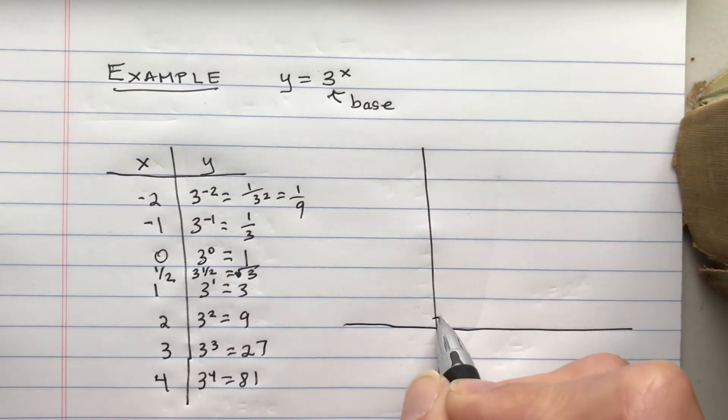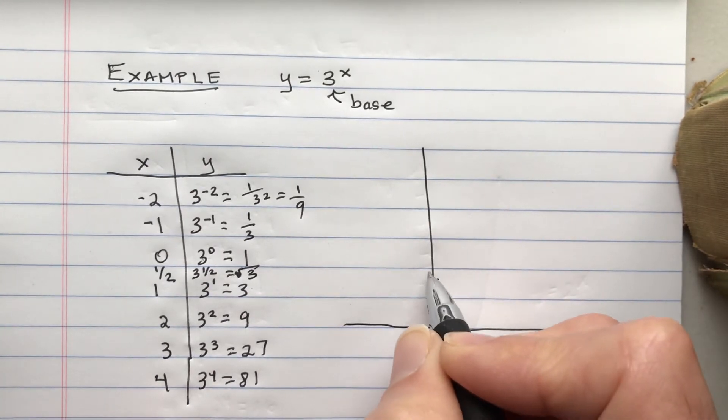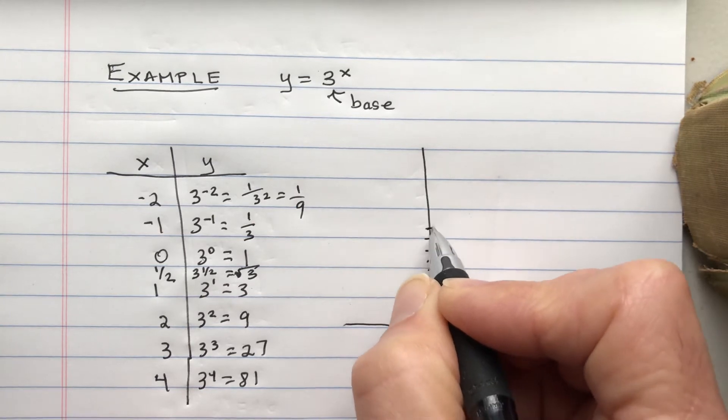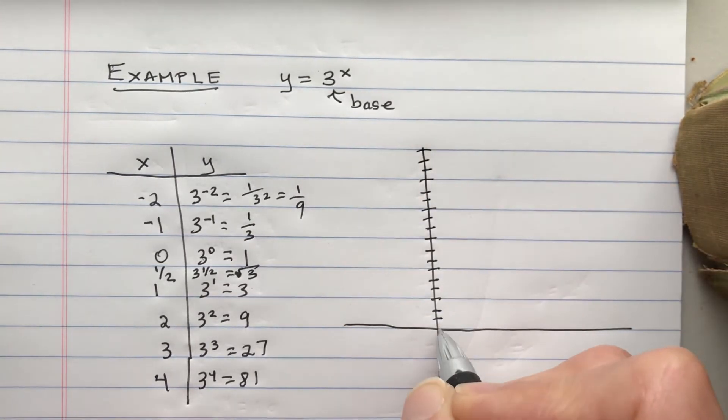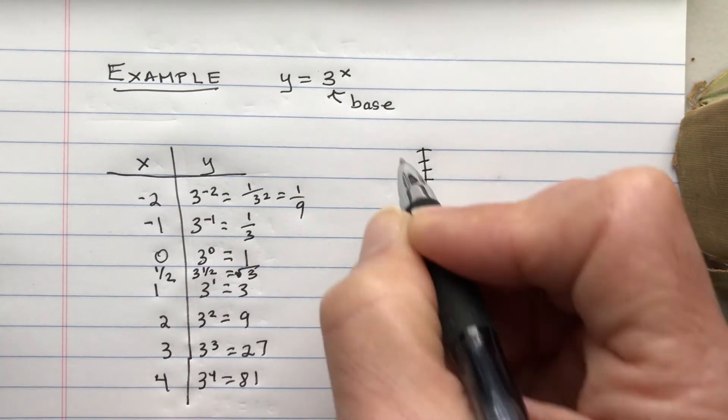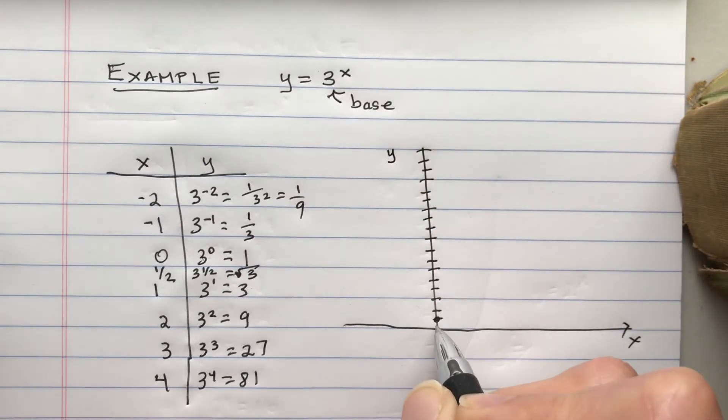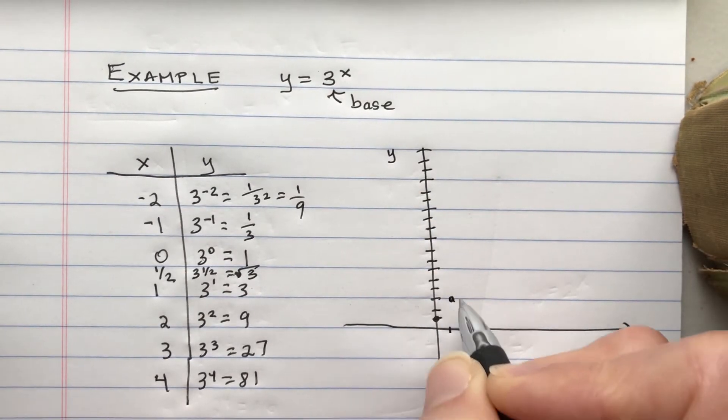And so here I'm doing increments of 3 there. So I start off with, let's label this x and y. So we start off with 0, we have 1. 1, 3, 2, 9.